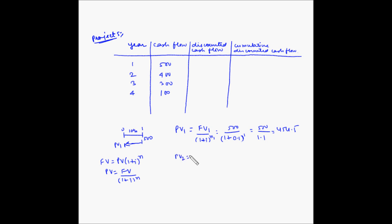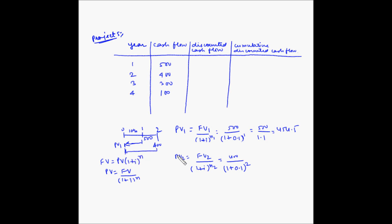Similarly, PV2 equals FV2 divided by (1 + i) to the power n2, which is 400 divided by (1 + 0.1) to the power 2, because this is being discounted for 2 years. So this is 400 divided by 1.1 squared, which equals 330.6. Similarly, PV3 is 225.4 and PV4 is 68.3.